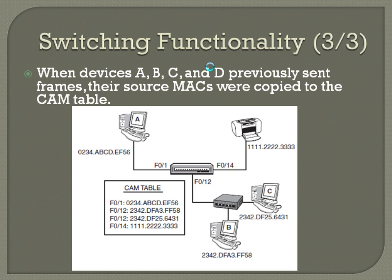You can see exactly how that works in the example. Computer A, presuming the CAM table is completely blank initially — because it's not going to know where to send anything from the get-go — needs to send something out. It sends a frame into port F01 to the switch. The switch analyzes that, sees that the source MAC address is that of Computer A — 0234.abc.ef56 — and associates that to port F01, because it knows that MAC address is directly connected, or somewhere connected, to that port.